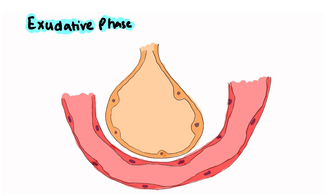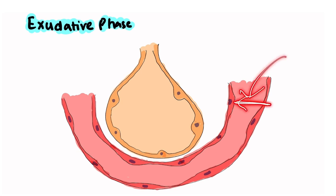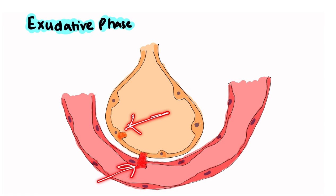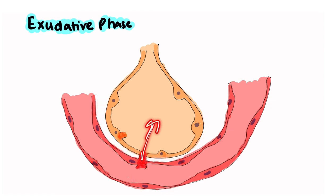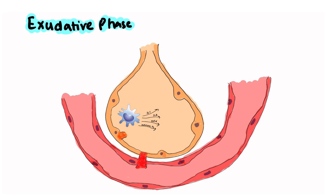In the exudative phase, the alveolus and capillary are central to the pathogenesis. Whenever there is direct or indirect lung injury, type 1 pneumocytes and endothelial cells get damaged. This leads to loss of the alveolar barrier, allowing fluids and proteinaceous material to enter the alveolar space and accumulate in the interstitium. Alveolar macrophages get activated and begin secreting pro-inflammatory cytokines like interleukin-1, interleukin-8, TNF-alpha, and leukotriene B4.